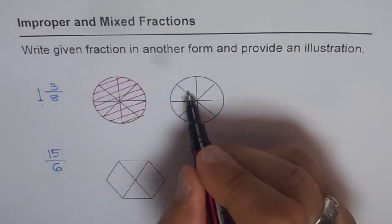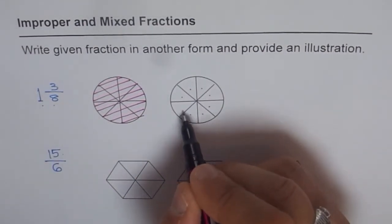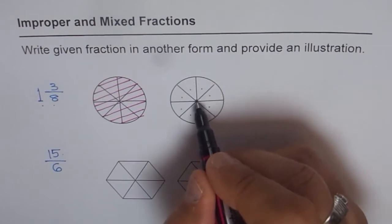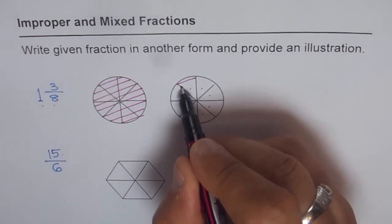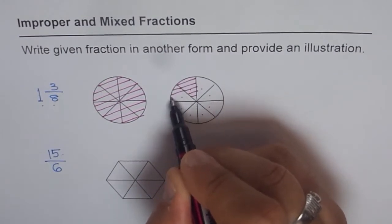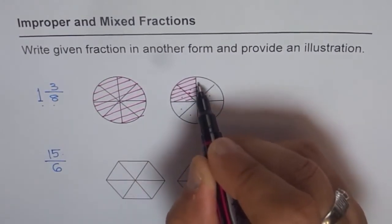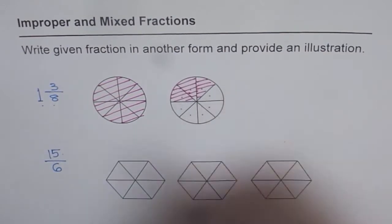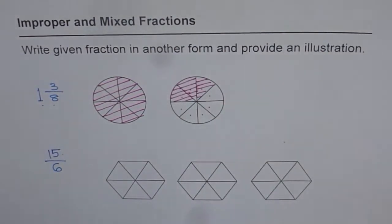And 3 out of 8. 1, 2, 3, 4, 5, 6, 7, 8. So we shade 3 out of them. Let's say 1, 2, and 3. So I am just shading 3 out of them. So 3 out of 8 and 1 whole has been done for us.